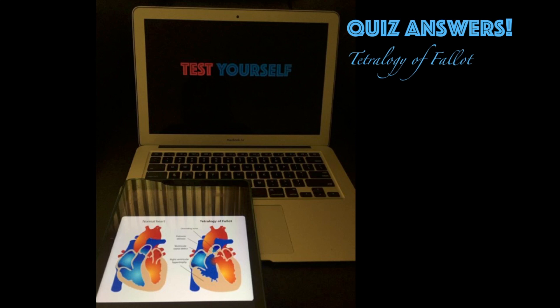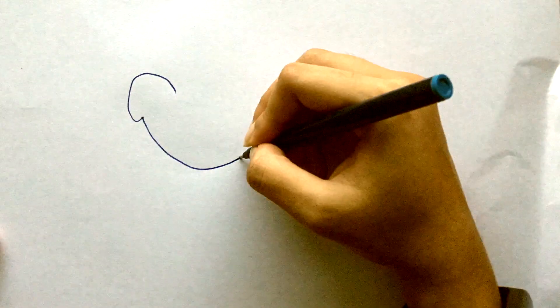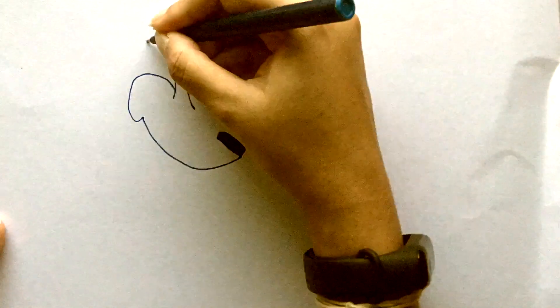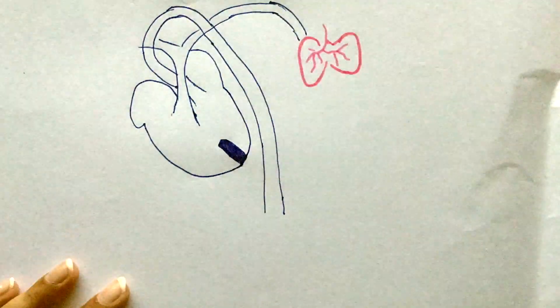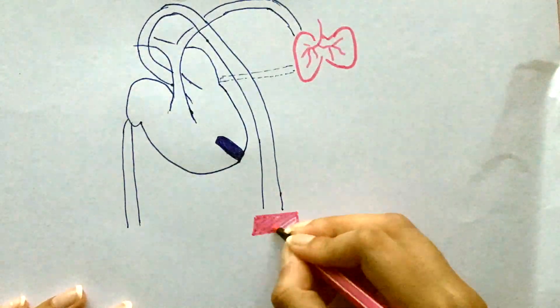Hey everyone! In this video, I am going to discuss the answers to the quiz on the Tetralogy of Fallot. Before I start with the questions, let me draw the heart. These are the lungs and let's assume this represents the other organs of the body.